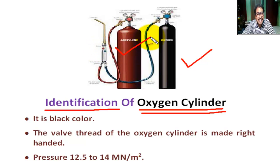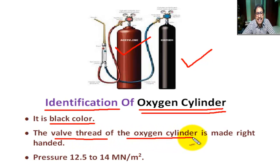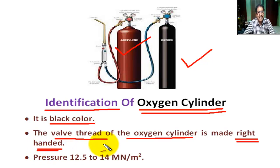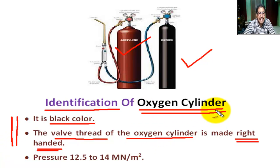First, what is the method of identification of the oxygen cylinder? This is the oxygen cylinder and this is the acetylene cylinder. The oxygen cylinder is black in colour. The bulb head of the oxygen cylinder is made right-handed — right-hand threads are used in the valve of the oxygen cylinder. This is the main identification of the oxygen cylinder.